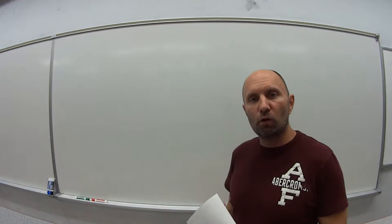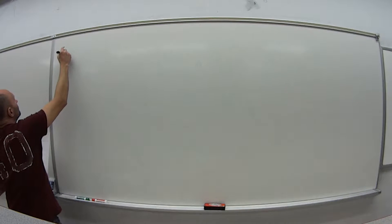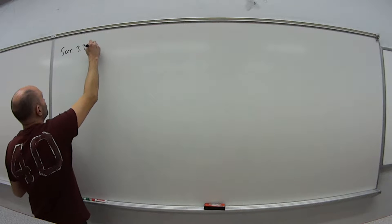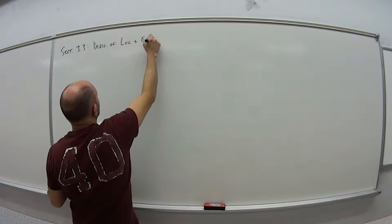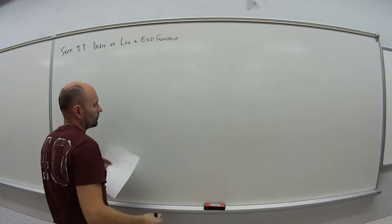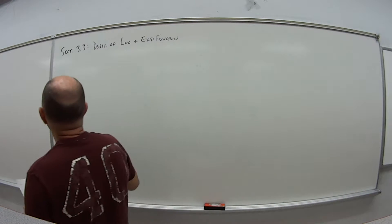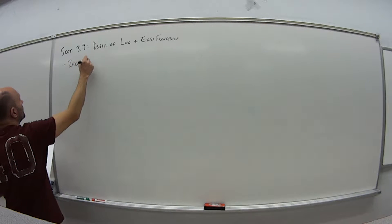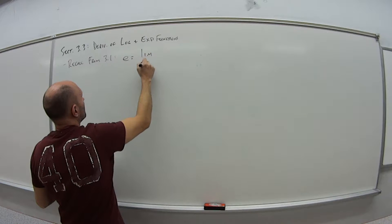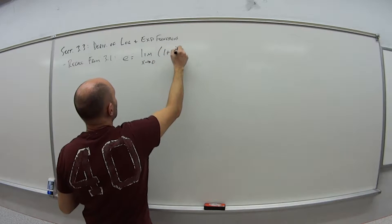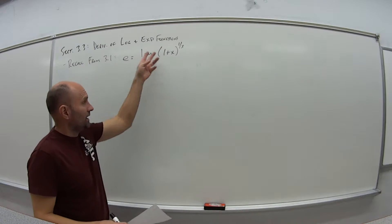Hi and welcome to video one of three videos for section 3.3 for math 181. In this section we're going to be looking at the derivatives of logs and exponential functions. In 3.2 we looked at a lot of the properties of logs and exponentials, and now we're going to look at their derivatives. Recall from 3.1 that e was rewritten as the limit as x approaches 0 of 1 plus x to the 1 over x power. So as we're taking the derivative, we're really taking the derivative of this function.